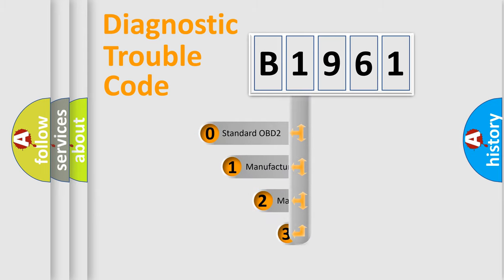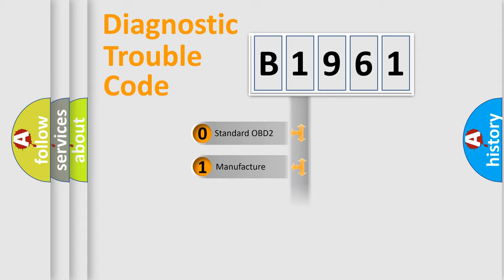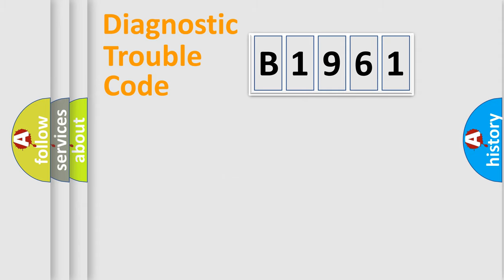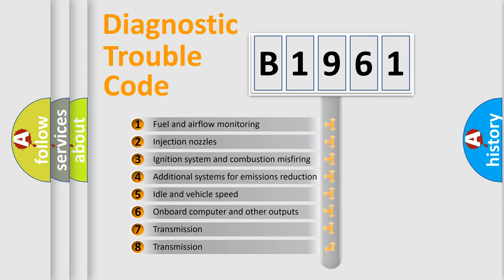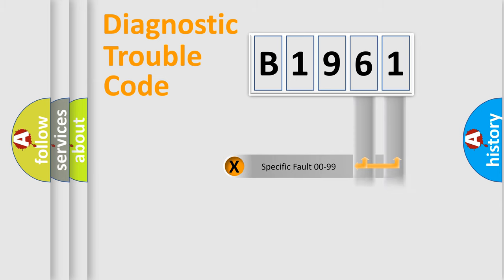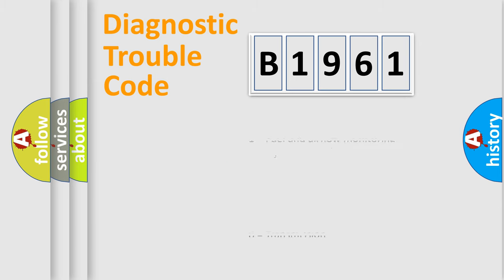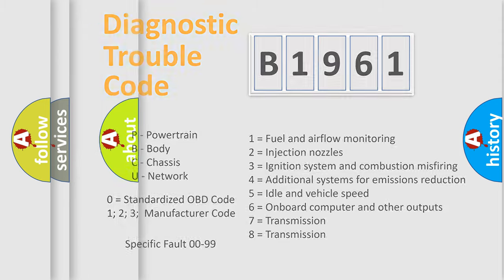This distribution is defined in the first character of the code. If the second character is expressed as zero, it is a standardized error. In the case of numbers 1, 2, or 3, it is a manufacturer-specific error expression. The third character specifies a subset of errors. The distribution shown is valid only for the standardized DTC code, and only the last two characters define the specific fault of the group. This division is valid only when the second character is expressed by the number zero.